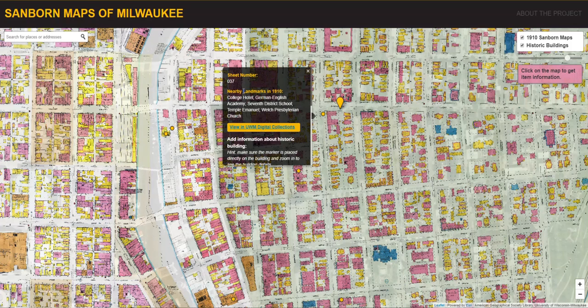The third layer is a user-created layer of historic buildings that are stored with latitude and longitude in a local PostGIS-enabled Postgres database.